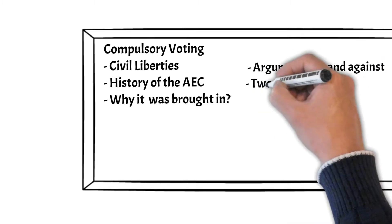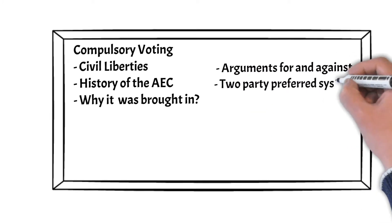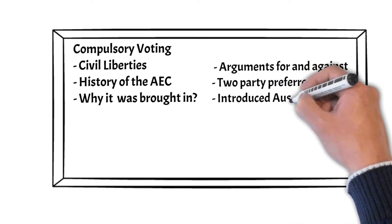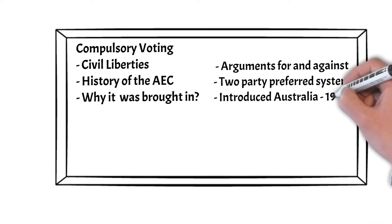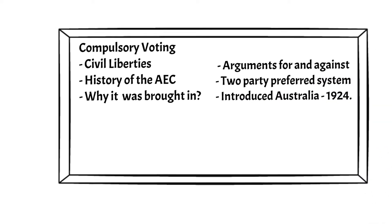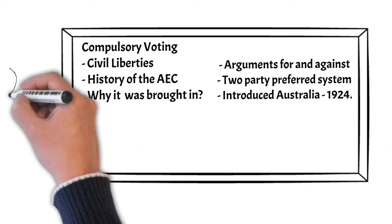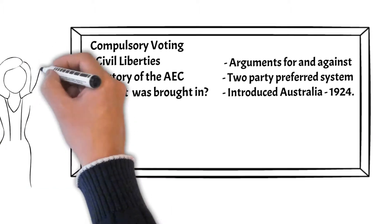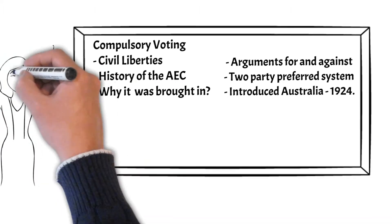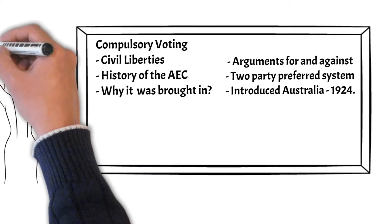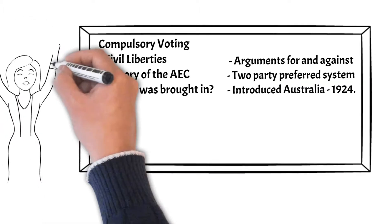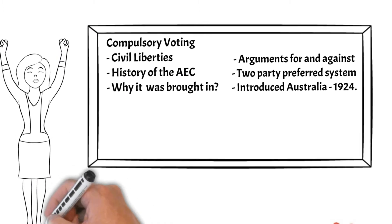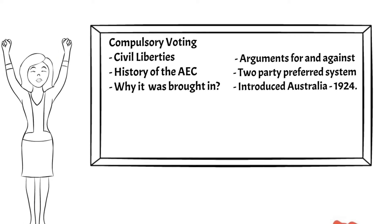Compulsory voting was introduced in Australia in 1924. If you are registered to vote — that is, you appear on the electoral roll — you must vote in each state and federal election. Failure to do so can result in a small fine, about $20 as of 2020.